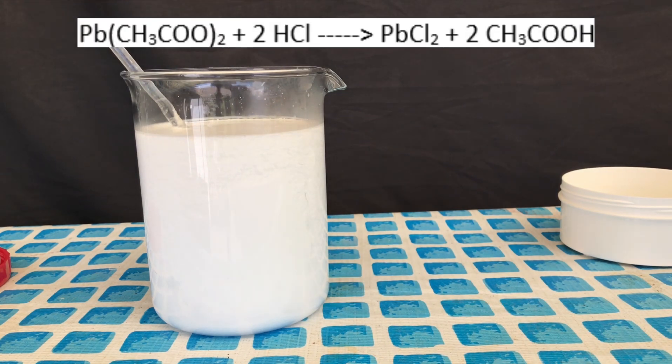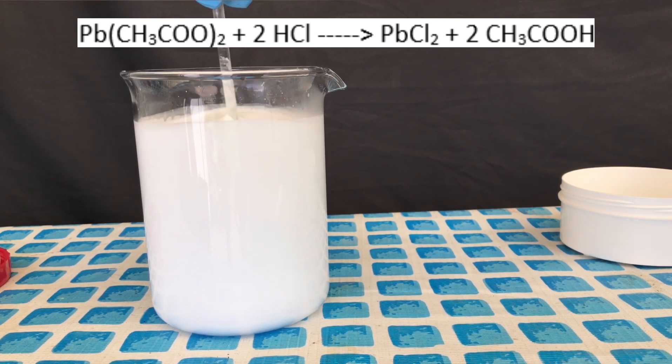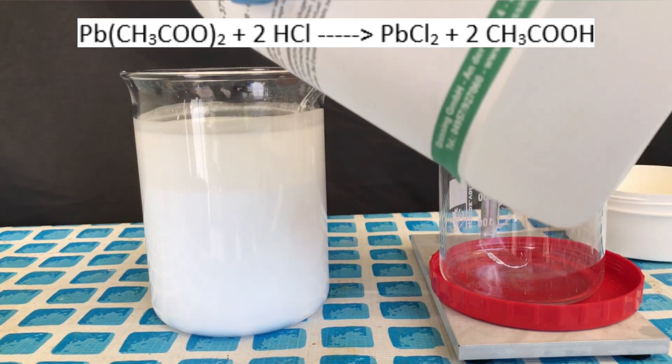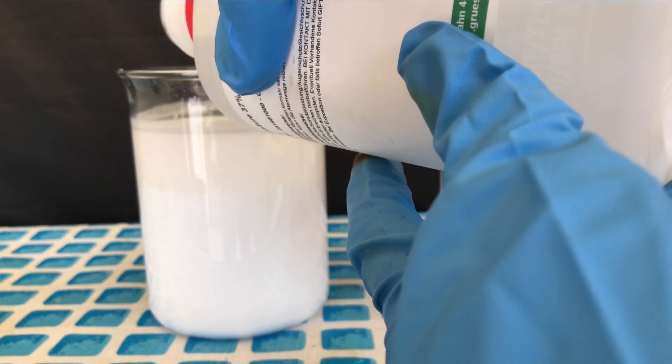The reaction taking place is the following: lead acetate reacts with hydrochloric acid to form insoluble lead(II) chloride and acetic acid. In reality the reaction is not as simple. Everything except the lead(II) chloride is in solution in the form of ions. It's barely visible but two layers have been formed here.